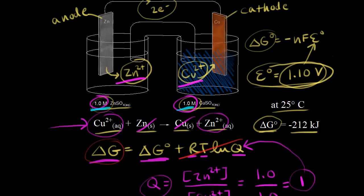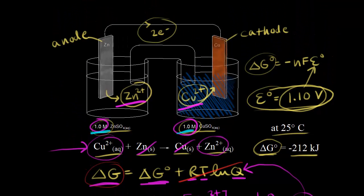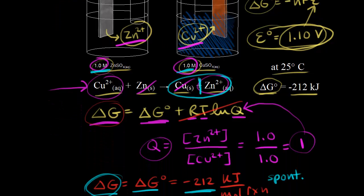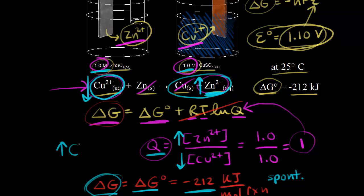The reaction proceeds to the right, making more products. What happens to Q as the reaction proceeds to the right? We're increasing the concentration of zinc two-plus ions and decreasing the concentration of copper two-plus ions. So Q increases as the reaction proceeds to the right — as we make more products, Q increases.